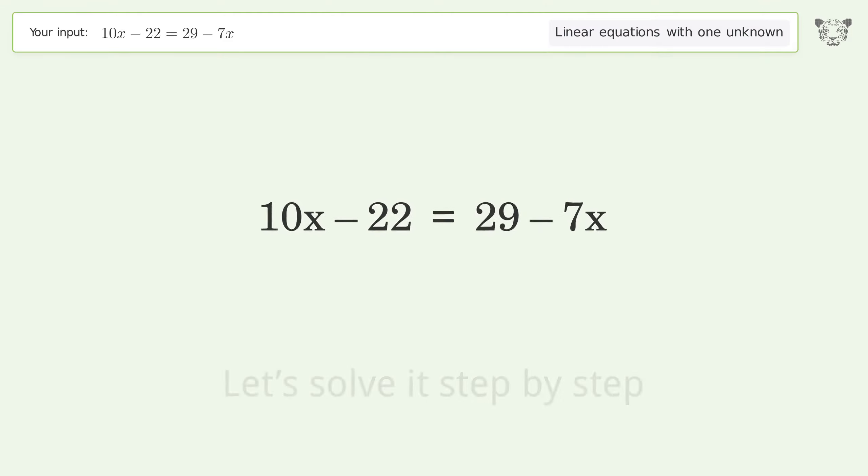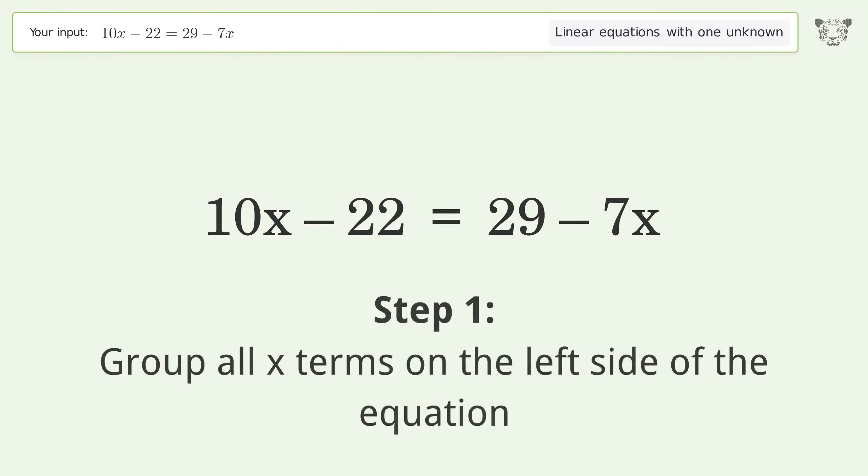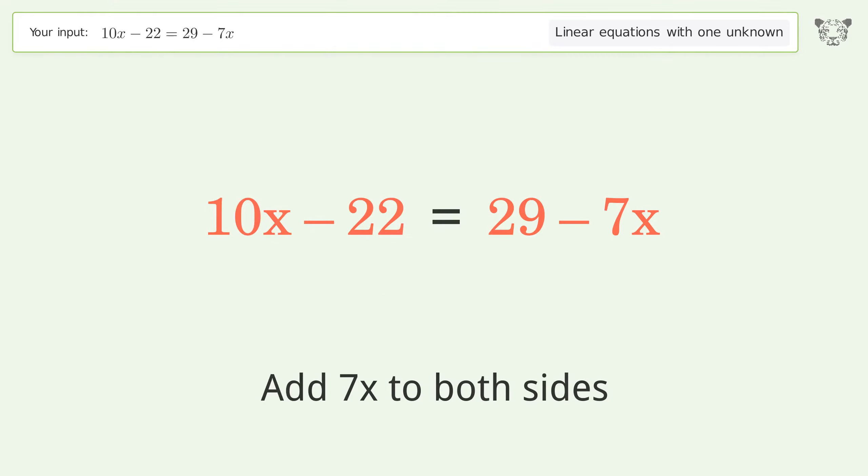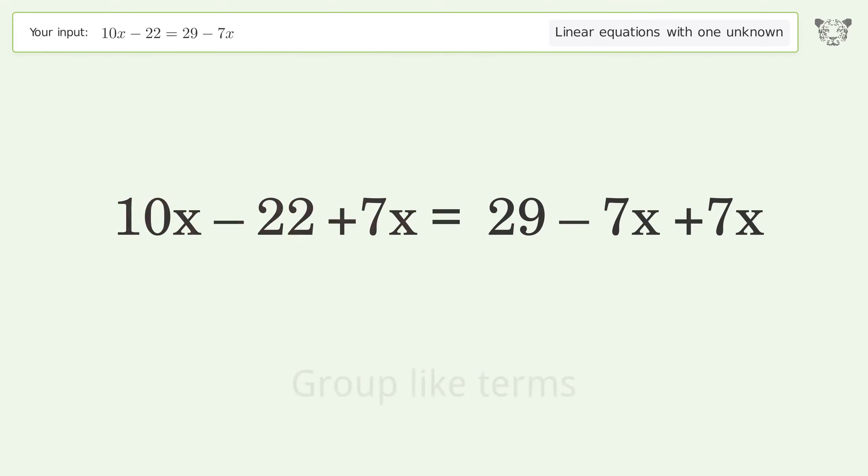Let's solve it step by step. Group all x terms on the left side of the equation. Add 7x to both sides. Group like terms.